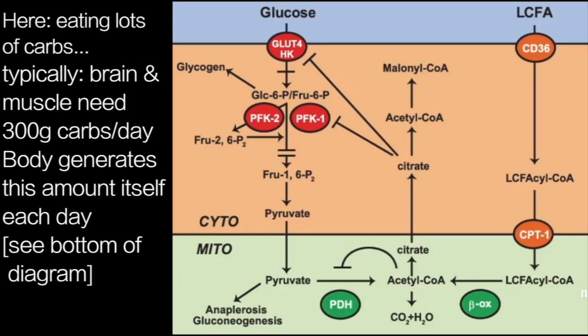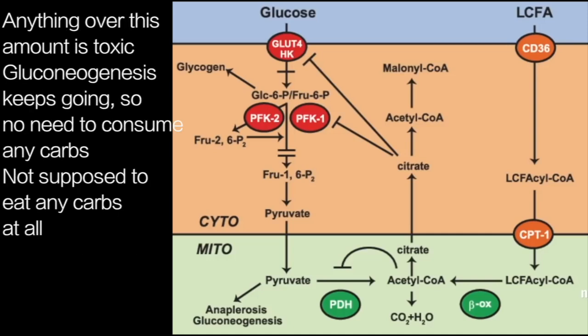Your body has all the enzymes to make glucose from glycerol out of fat molecules, from monocarboxylates such as pyruvate and lactate, and also from some of the proteins you consume. That's what's kept us alive for 350,000 years while there were basically zero carbohydrates available except for maybe a couple of weeks when the berries were ripe. Anything over and above that is toxic. So does that mean you can eat 200 to 300 grams of carbohydrates and get away with it? No — because gluconeogenesis doesn't stop. Your body is so attuned to making glucose every day because that's how your genes are designed. You're not supposed to eat any carbohydrates at all.